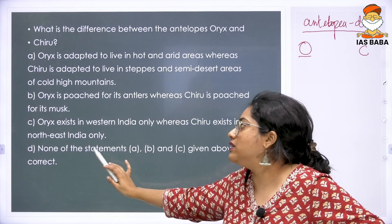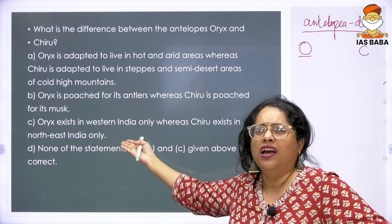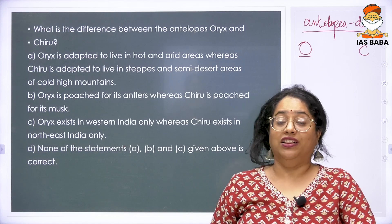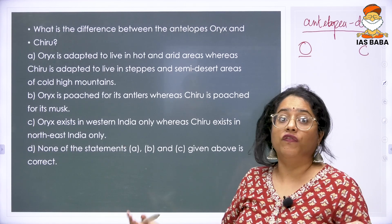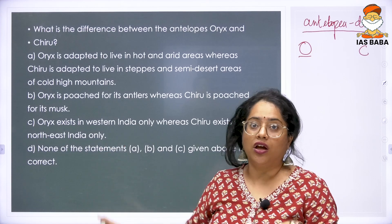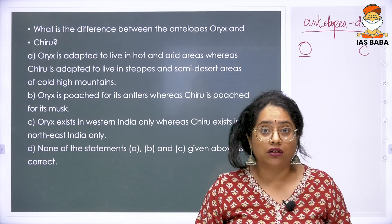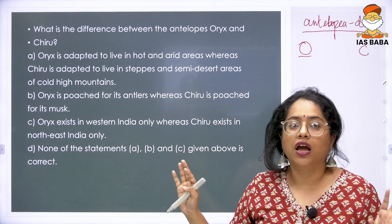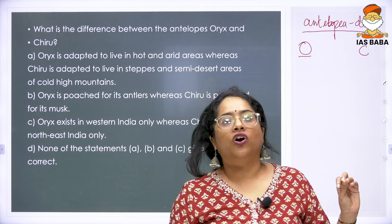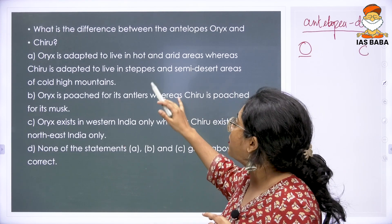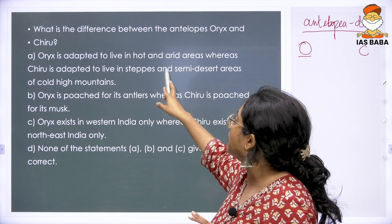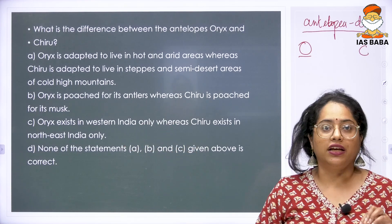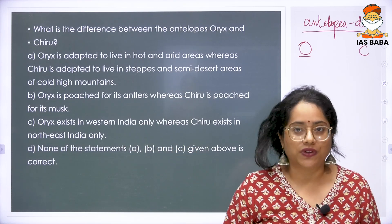When I am reading itself, the statement which stands out clearly as potentially wrong is the third statement — because we have not heard about any animal called Oryx in the western part of India. If it was something for which there is poaching for the antlers, obviously the number of that species would have been less, and we would have heard about it. There is some incoherence between these statements. They say Oryx is adapted to hot and arid areas, but then say it exists in western India only, while Chiru exists in northeastern India only — there is a lot of incoherence.